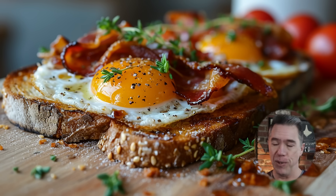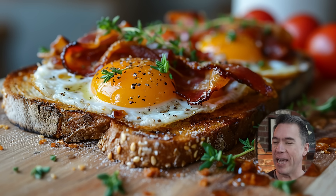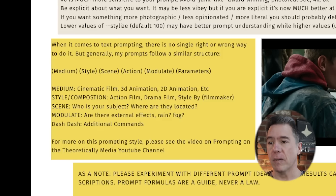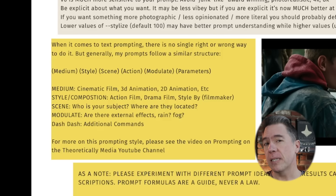Taking that same toast prompt and adding a stylized 1000 to it gets us this beautiful heart stopper. I do like the fact that it's got the fried egg and the bacon on there, but it's on whole wheat toast, so it evens out. In general, I found that my standard prompt formula of medium, style, scene, action, modulate, parameters seems to be holding up pretty well. I did do an entire video on this that is linked down below.